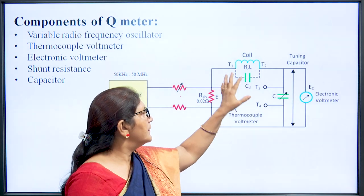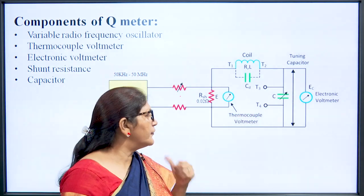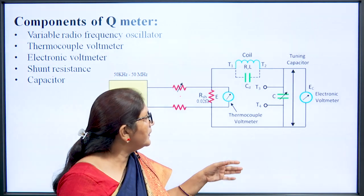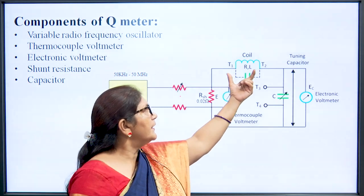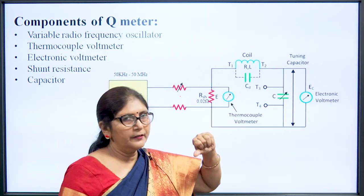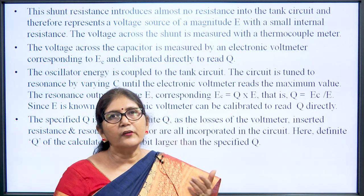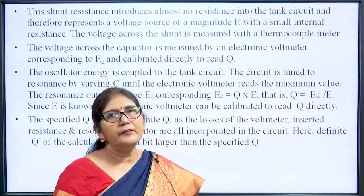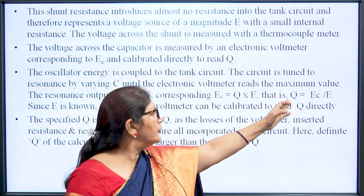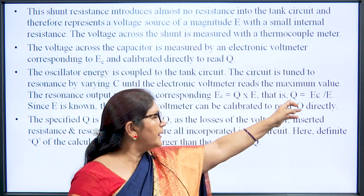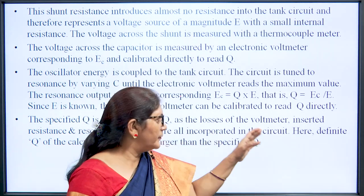There are four terminals in this meter: T1, T2, T3, and T4. When using the shunt measurement method, we connect the coil or capacitor between terminals T1 and T2. The shunt resistance introduces almost no resistance into the circuit. Q is calibrated as EC/E, and since Q is proportional to EC, the meter is directly calibrated in Q and displays the Q value.